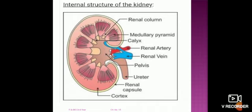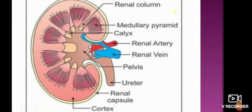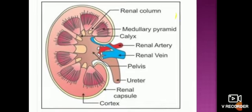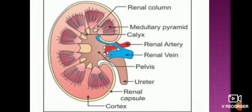The kidney is divided into two regions: the outer portion is known as the cortex, also called the renal cortex, while the inner portion is known as the medulla, also called the renal medulla.